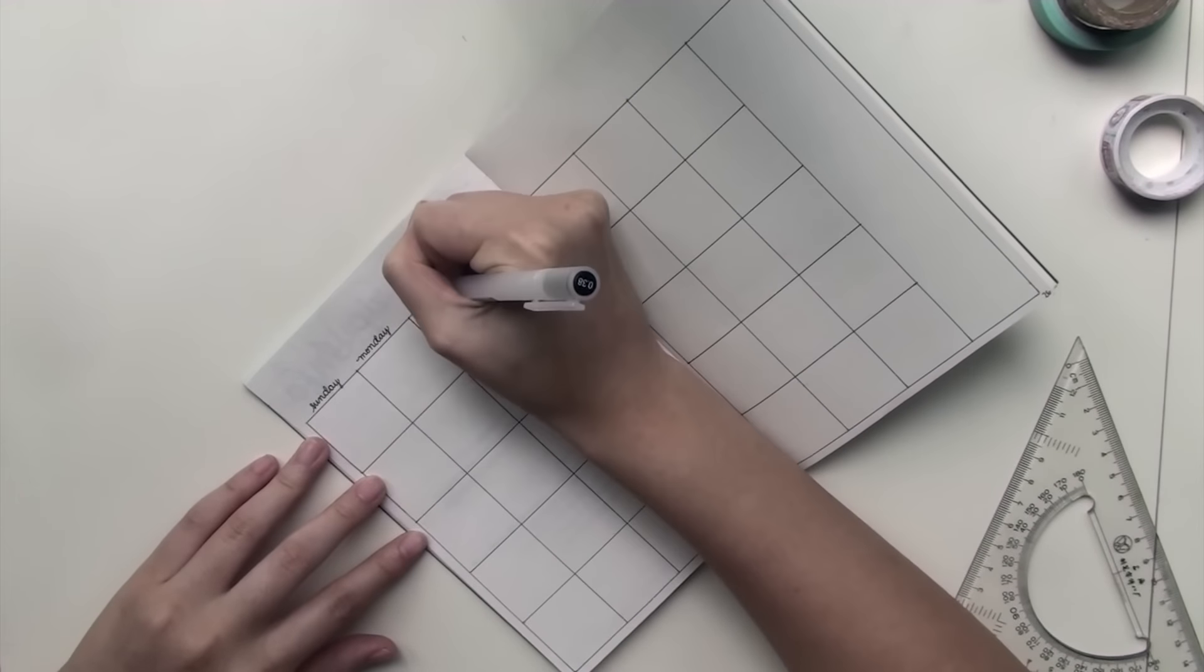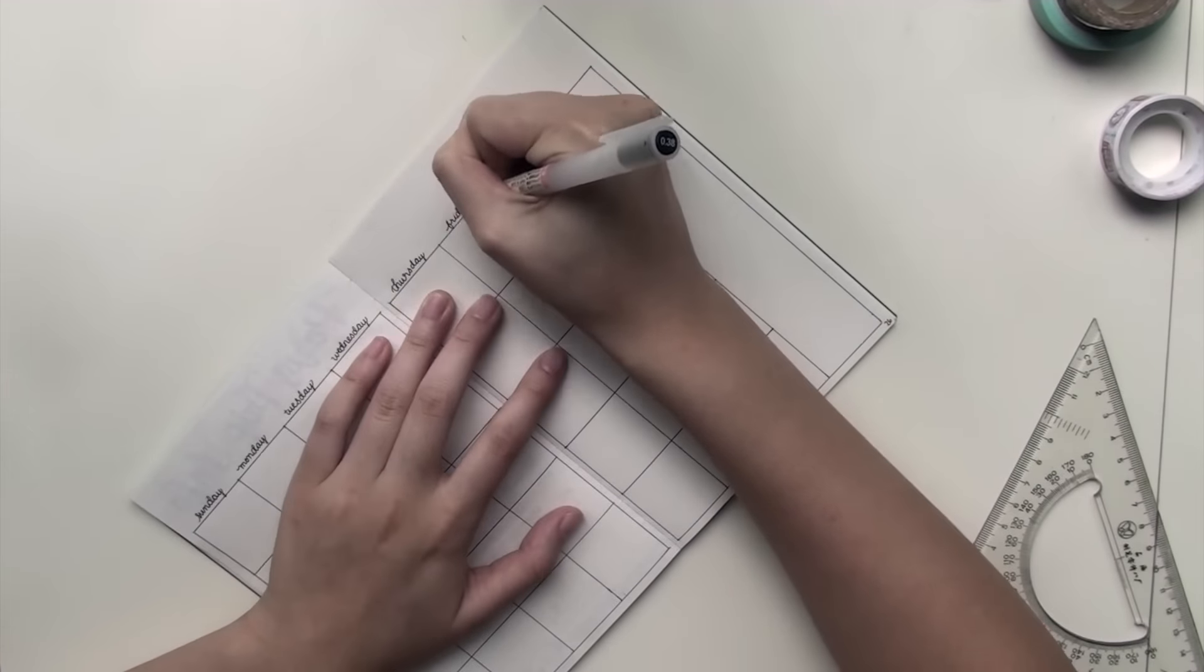Now I'm just writing the days of the week at the top from Sunday to Saturday and the last column is reserved for notes.